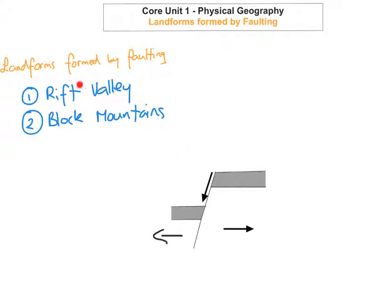Okay, so the first thing we're going to look at is the rift valley feature that forms. What happens here is it happens at constructive plate boundaries where the plates are pulling apart, and it creates a lot of tension.